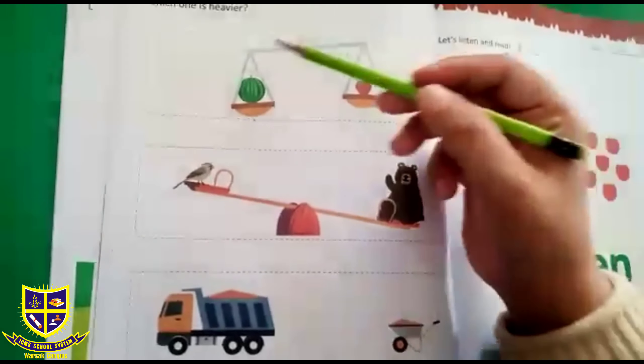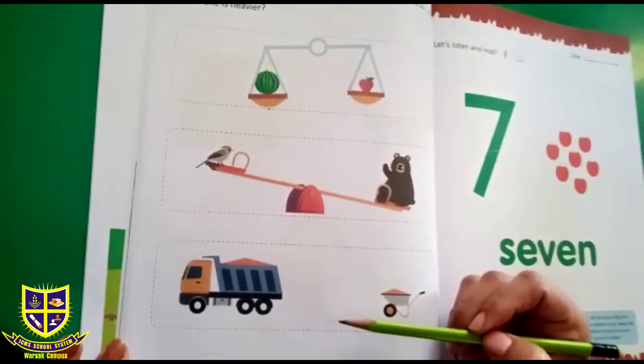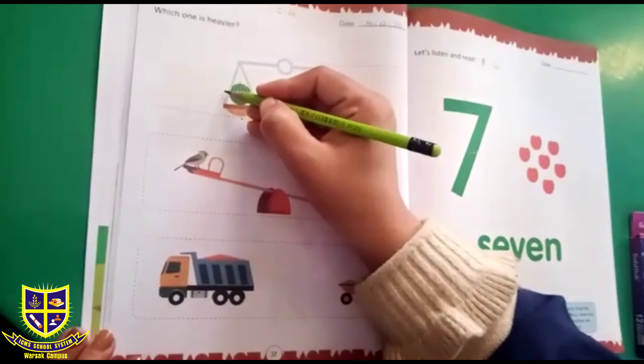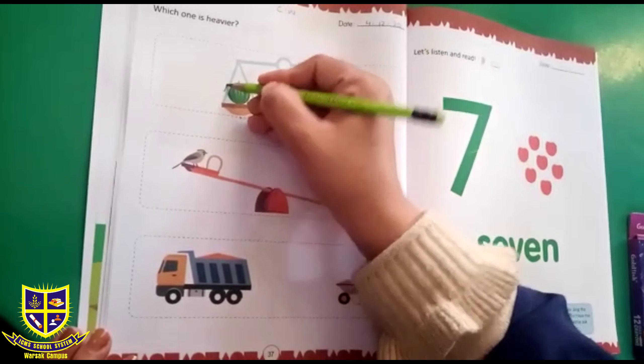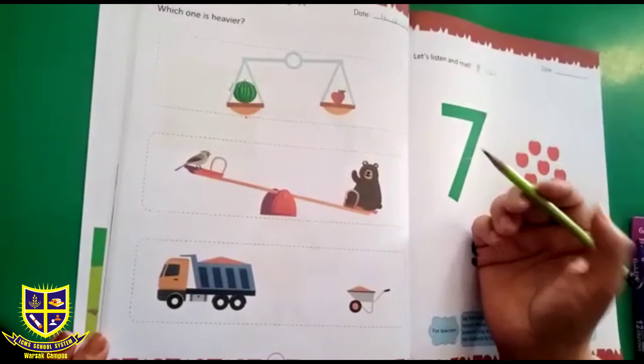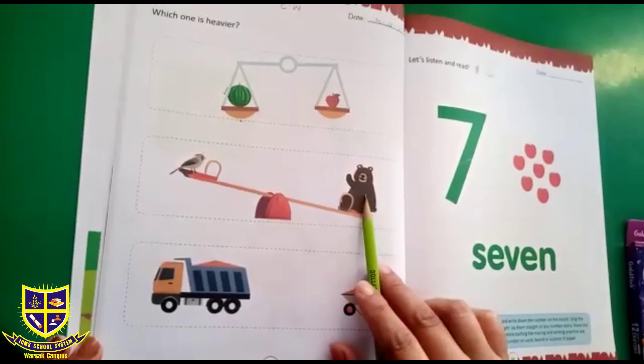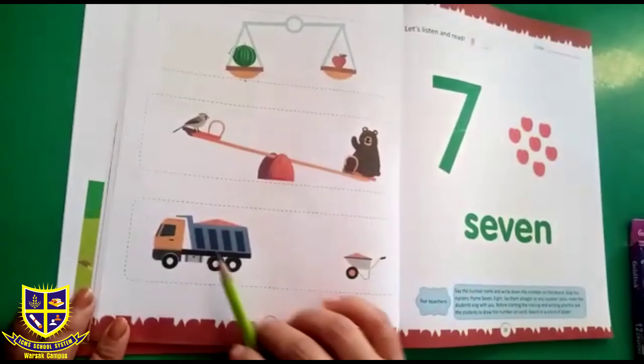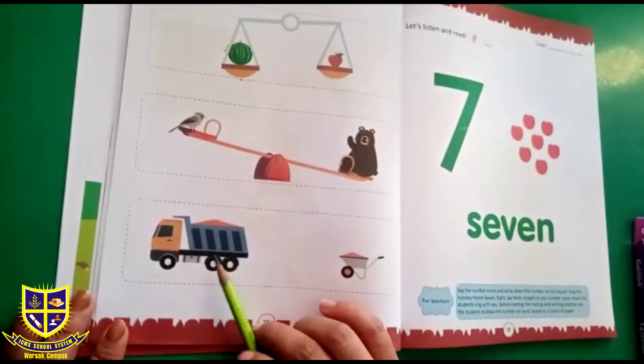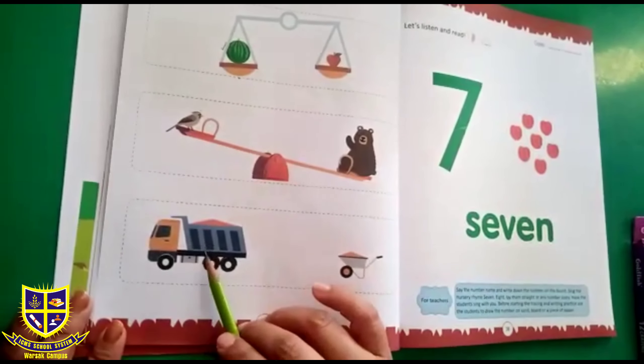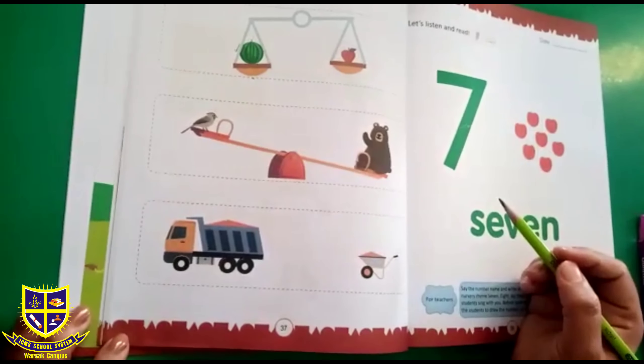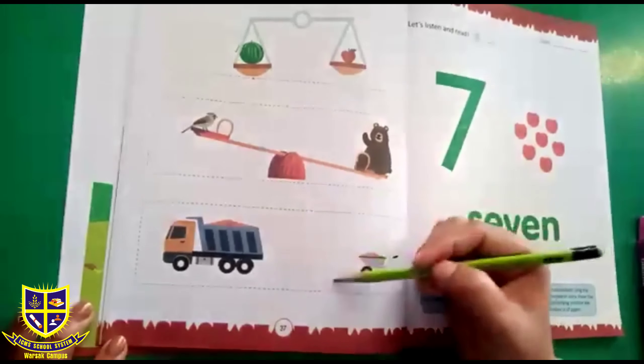You have to tick mark whichever is heavy in these three questions, like this. Watermelon is heavy, so you have to tell me which one of these two is heavy. And in these two trolleys, which one is heavy? Is this trolley heavy or is this trolley heavy? Okay, now this will be your homework. I will check it on Monday.